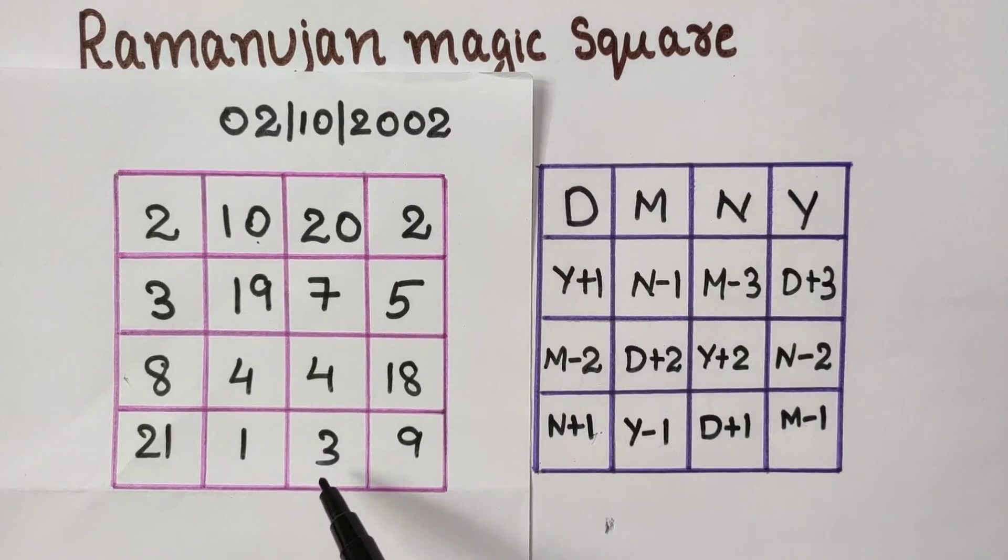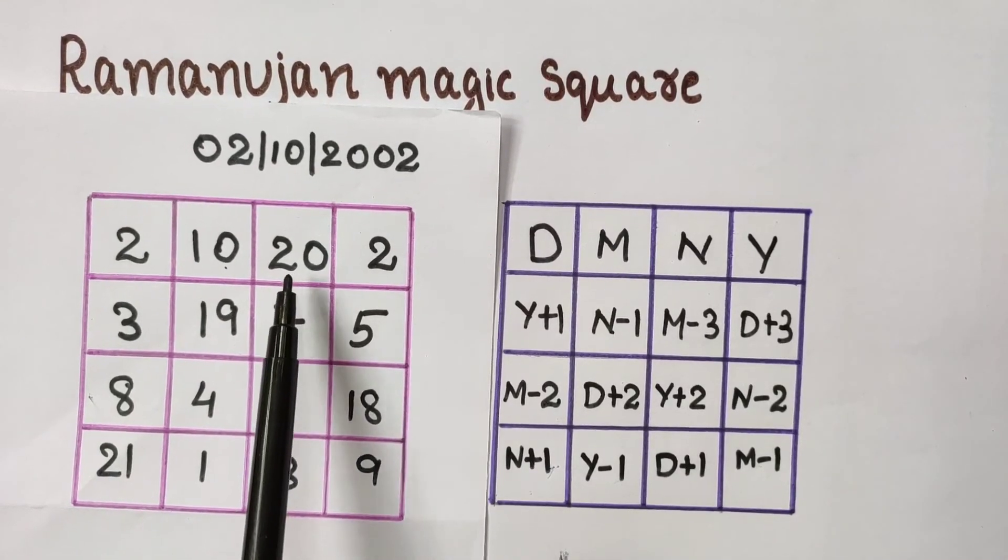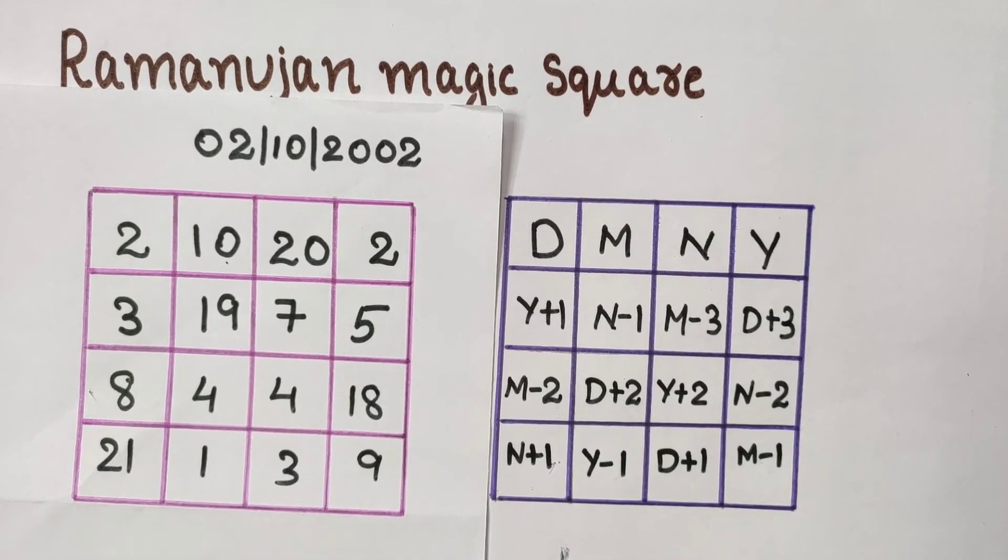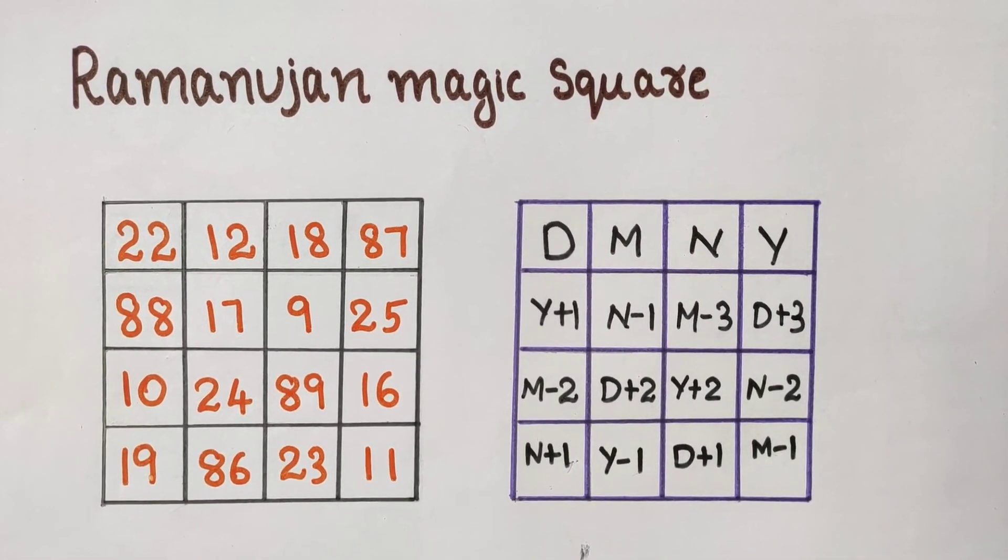Sum of numbers 20, 5, 8, and 1 is 34. Hope you like this video. Try making your own birthday magic square using this method.